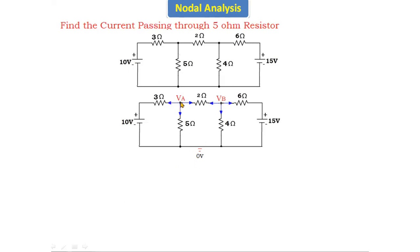By using KCL we will find out VA and VB. Let's write the KCL for node A. At node A, I am assuming that all the currents are leaving. We can assume any direction — some entering, some leaving — that is our choice. I am assuming all currents are leaving from this node, and according to that direction I will write the equation.